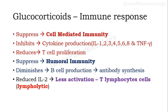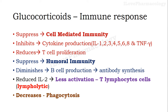The most important cytokine which is inhibited or reduced is interleukin-2. Because of the reduction in interleukin-2 there will be fewer activated T lymphocyte cells. Additionally, these glucocorticoids will decrease the phagocytic activity produced by macrophages.